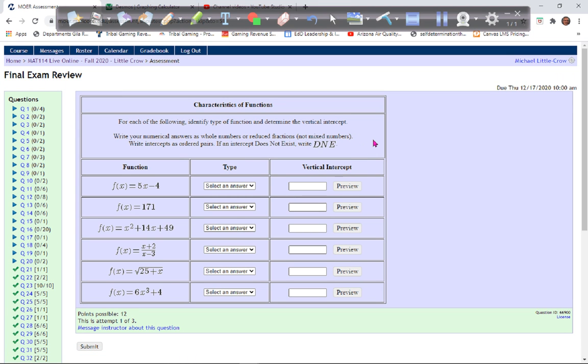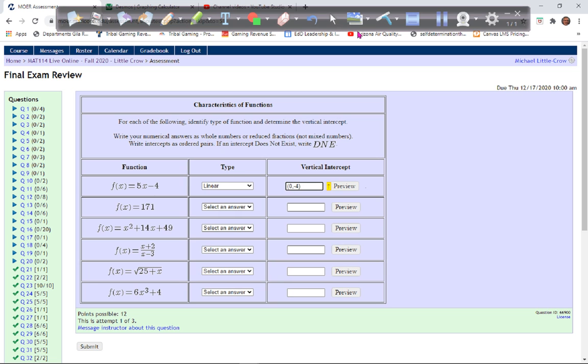Question 52, characteristics of functions. What we're going to be asked here is what kind of function is it - is it linear, quadratic, cubic, radical, constant, or rational? Linears are basically x to the first power, so y equals mx plus b. This definitely is linear. The vertical intercept is negative 4, so when x is zero, y is negative 4.